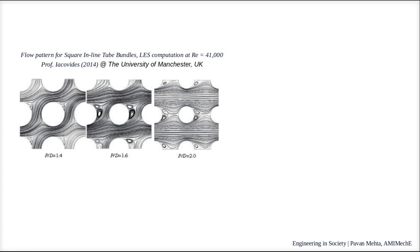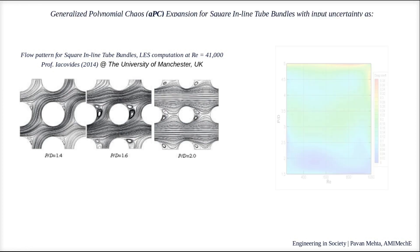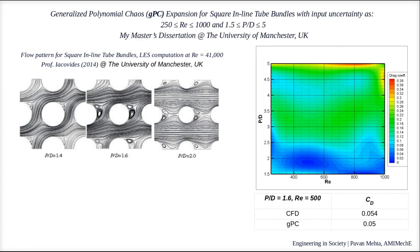Fluid flow is a highly non-linear phenomenon and it could be a challenge to any UQ technique. Success was met in my master's dissertation with the use of generalized polynomial chaos in building a surrogate model. From the response surface, it can be seen that with a distance between the two tubes of 3 to 3.5, we have a very robust system with minimal fluctuation for any given inlet flow velocity.